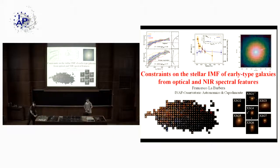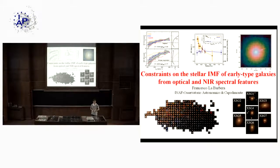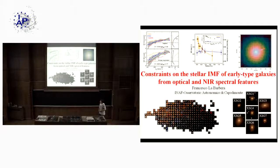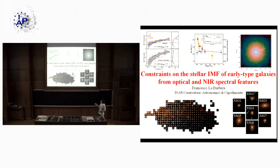Good morning everybody. I would like to thank Florence and also Paolo for giving me this nice opportunity to have this talk here today. As Paolo was mentioning, I will tell you today about our work on the stellar initial mass function in early-type galaxies. This is a project that we started a number of years ago, in 2013 actually, and we have been doing this kind of analysis using different data sets — Sloan data, data from GTC, and more recently with MUSE and also X-Shooter and CALIFA data.